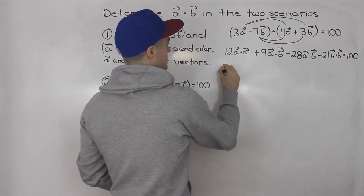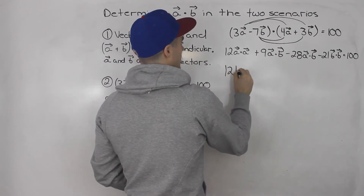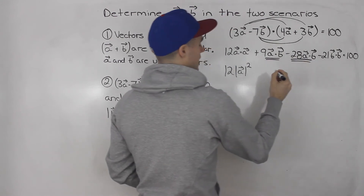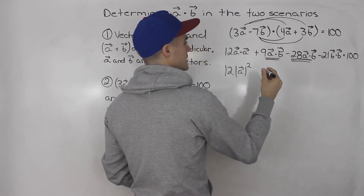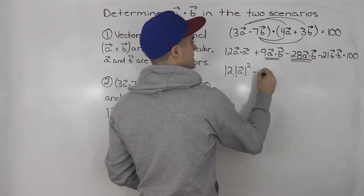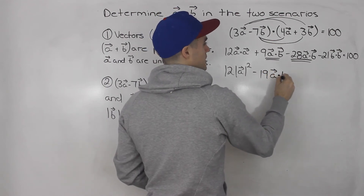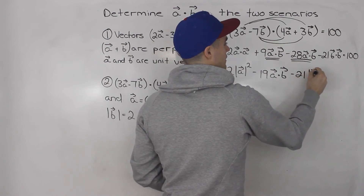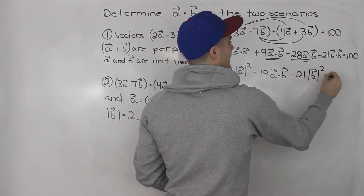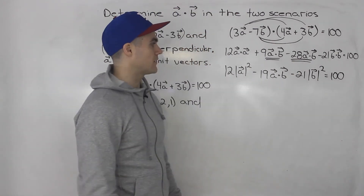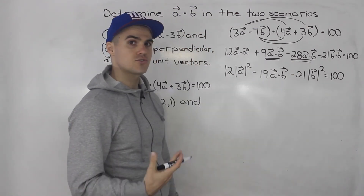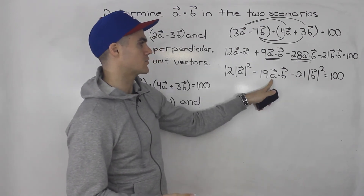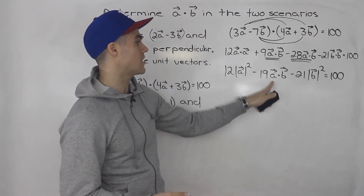This simplifies to 12 times the magnitude of a squared, then 9 minus 28 is minus 19, so minus 19 times a dot b, then minus 21 times the magnitude of b squared, and that equals 100. At this point we plug in the magnitudes for a and b and isolate for a dot b.